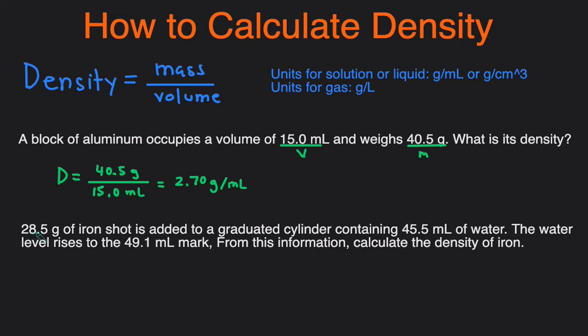We have 28.5 grams of iron added to a graduated cylinder that originally contains 45.5 milliliters of water. The water level rises to 49.1 milliliters when we add the iron. From this information, calculate the density of the iron.